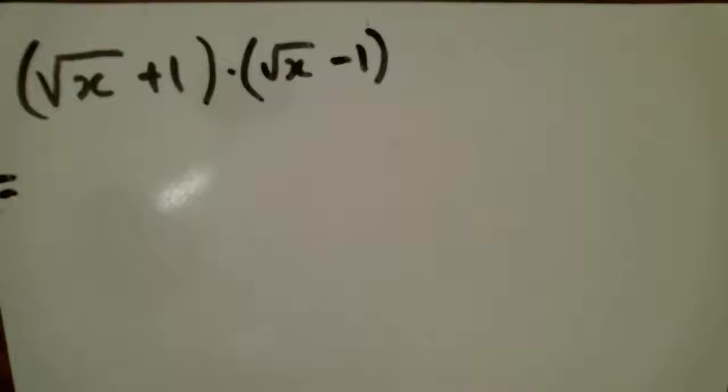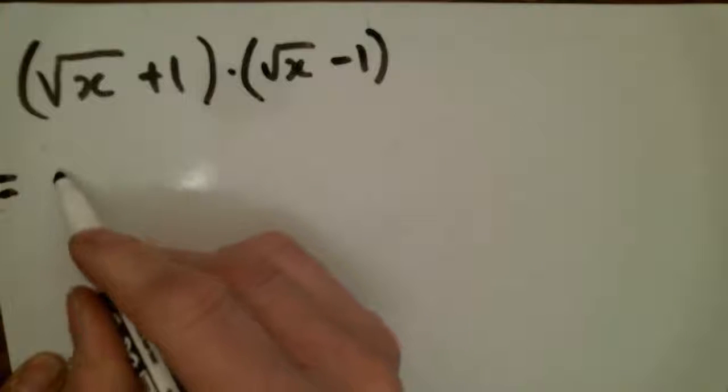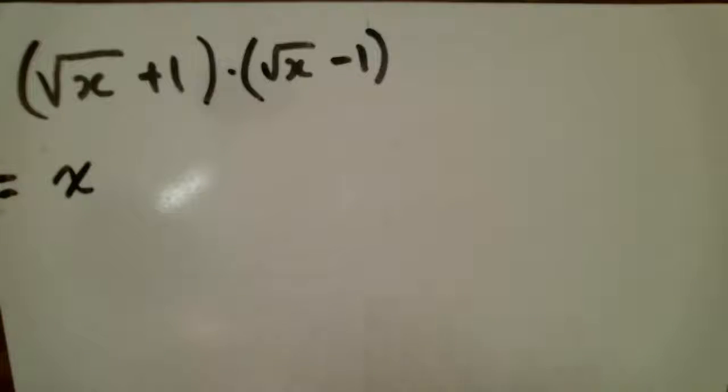Now here's where the magic begins. The square root of x times the square root of x is x. And so notice that the radical expression is gone.